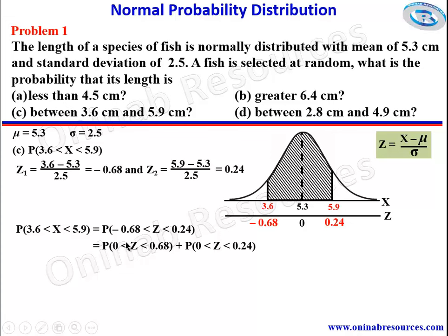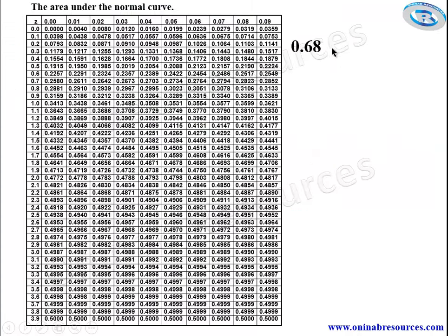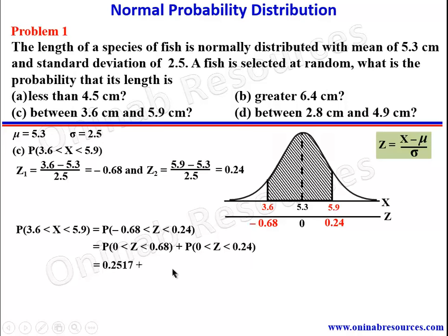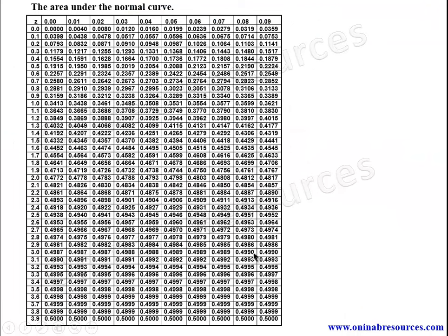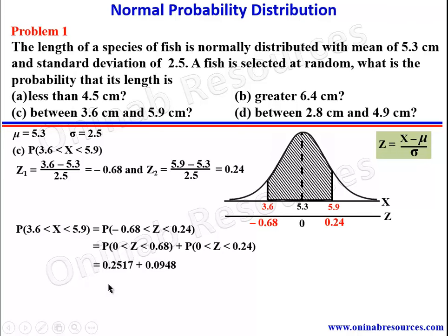We look up 0.68 in the table: that's 0.6 plus 0.08; their intersection gives 0.2517. Then for 0.24: that's 0.2 plus 0.04; intersection gives 0.0948. Adding them: 0.2517 + 0.0948 = 0.3465. As a percentage, that is 34.65%, representing the probability that a randomly selected fish has a length between 3.6 cm and 5.9 cm. That's all for part C.